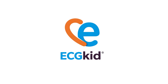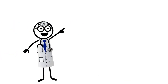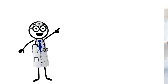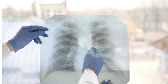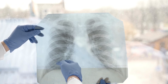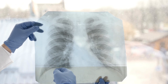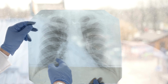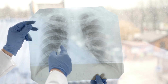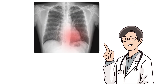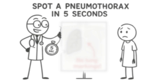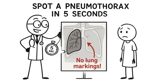Hey, welcome back to ECG Kid Portal, where we break down complex ICU stuff so it finally makes sense. Today, let's tackle something every intern dreads: reading chest x-rays. Specifically, how to spot a pneumothorax in under 5 seconds. Yep, 5 seconds. Once you know what to look for, it's that quick.